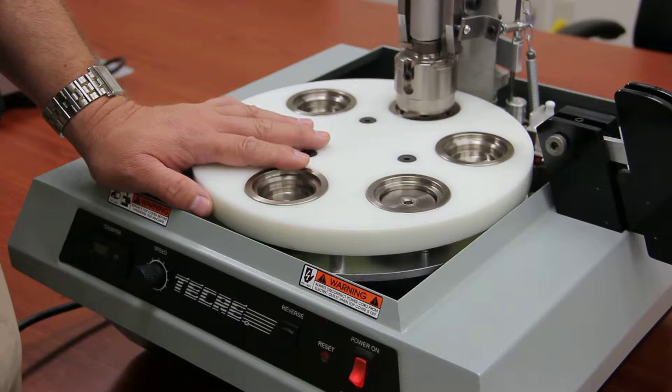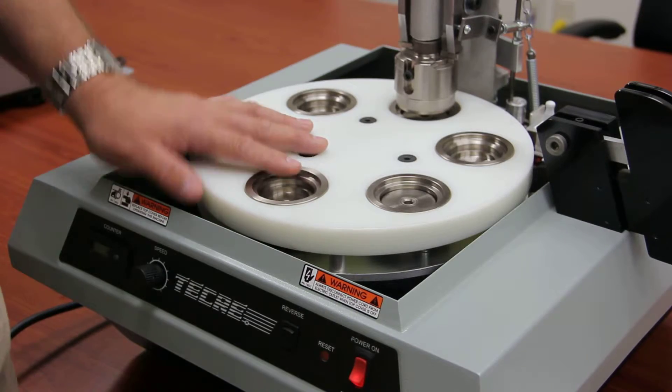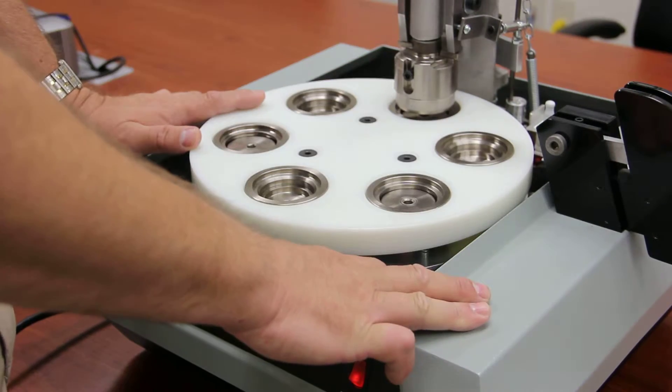This is a short video on how to change a die set on the Model 152 electric button machine. The first thing you want to do is remove the cover, which we've already done.